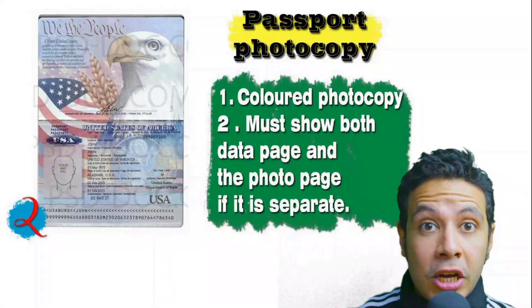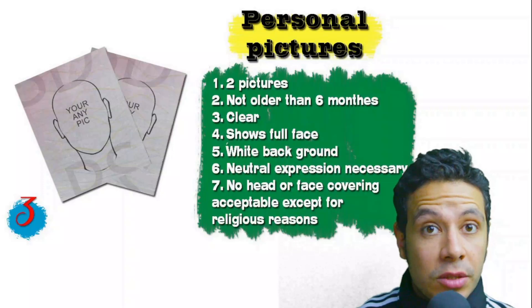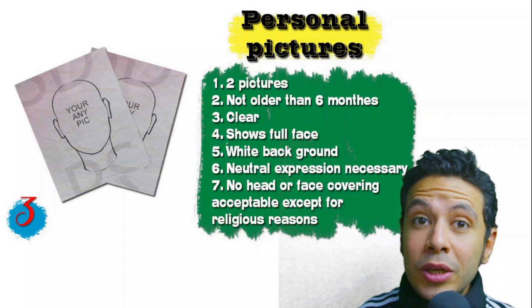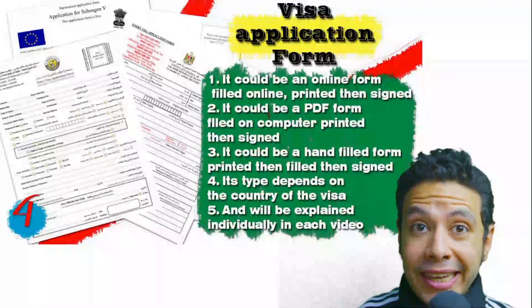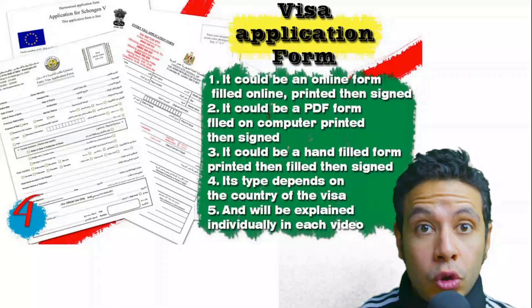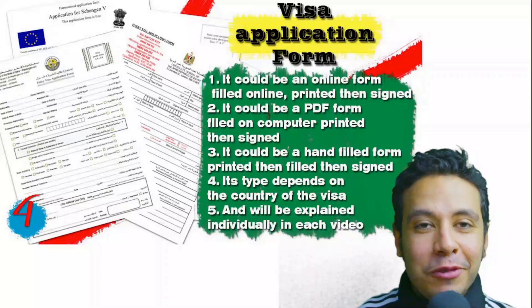For personal pictures, you will need at least two photos — sometimes one or three are required. They must be recent (not older than six months), clear, showing your full face, preferably with a white background, with a neutral expression and no head or face covering except for religious reasons. For the visa application form, generally one copy is needed, sometimes two or three. Forms vary by country — many now offer an online platform to fill and print the form.